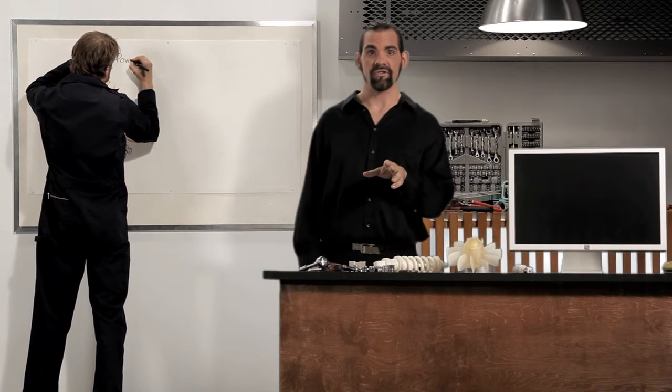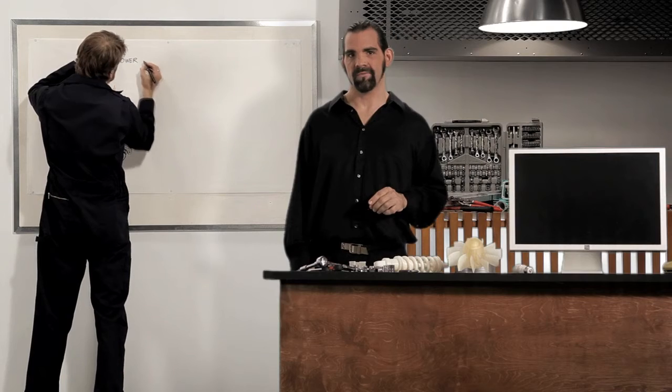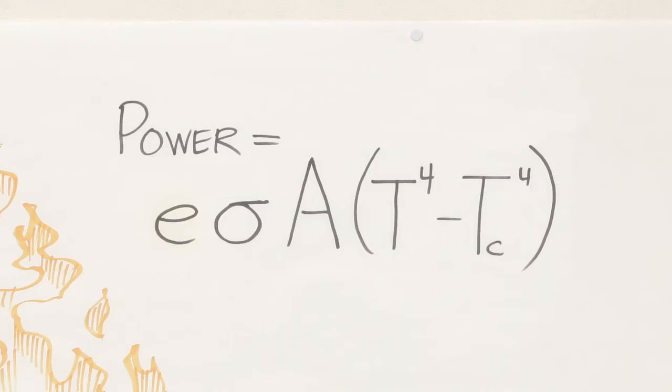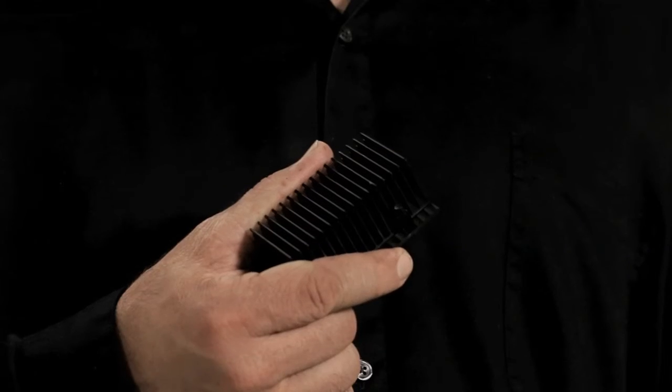You can control radiation heat transfer in three ways. First, some materials radiate heat more than others. We measure this as emissivity. Reflective surfaces have low emissivity, while dull black materials radiate more heat. So, a matte black coating on a metal heat sink can improve its radiative cooling.